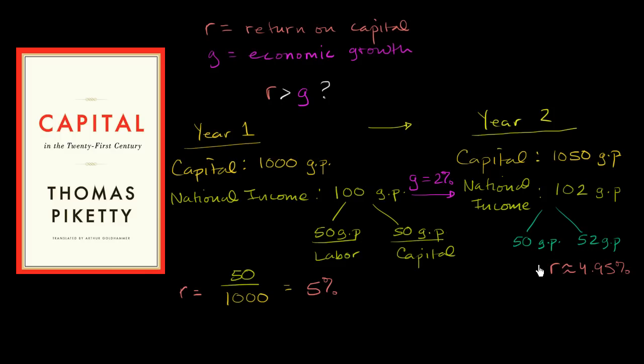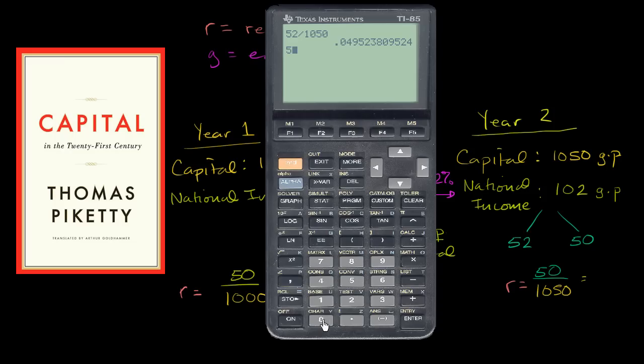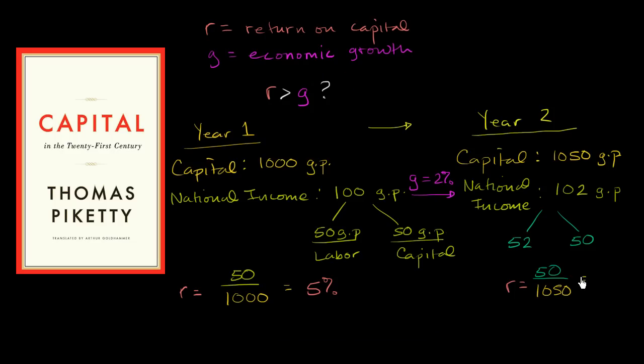But you could have things go the other way around. Maybe labor had a little bit more leverage this year, and they were able to negotiate some wage increases. And so, you have 52 gold pieces going to labor, and 50 going to capital. Now, what's the return on capital? Well, in this situation, the return on capital is going to be 50 over 1,050, which is approximately 4.76%.